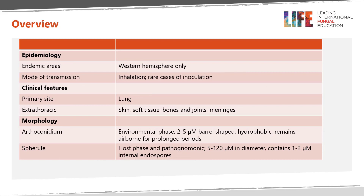For an overview, the endemic areas are only in the western hemisphere. The major mode of transmission is inhalation, with very rare cases of inoculation, so the primary site of infection in almost all cases is the lung. When extrathoracic dissemination occurs, the most common places are skin, soft tissue, bone and joints, and meninges.